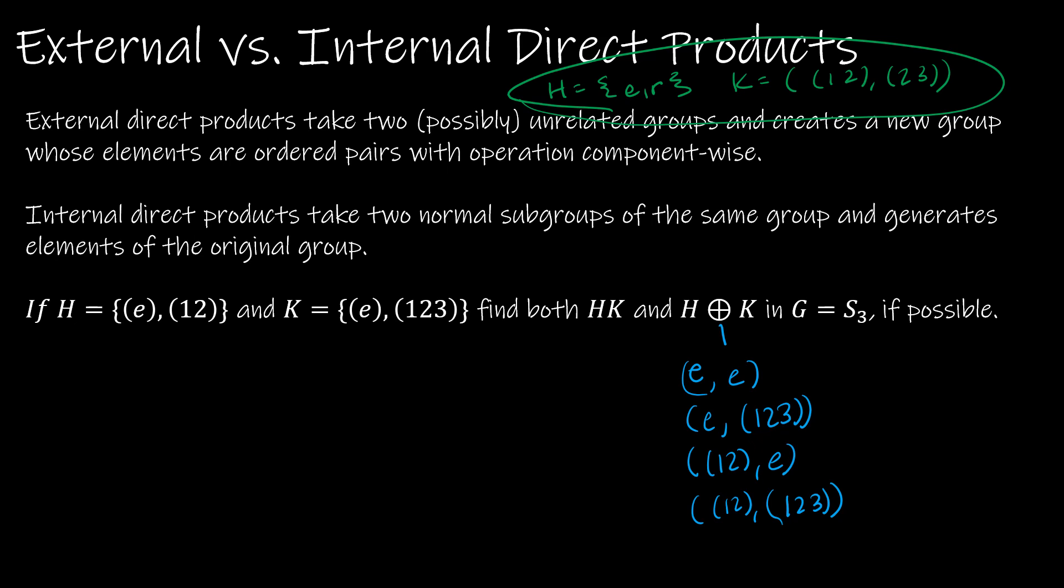Can I find HK? Can I find an internal direct product of these two, knowing that G is S₃? Well, I absolutely cannot, even though their only value that they have in common is the trivial subgroup, so just the identity. We know that in S₃, we should have e and (1,2), and (1,3), and (2,3), and (1,2,3), and (1,3,2).